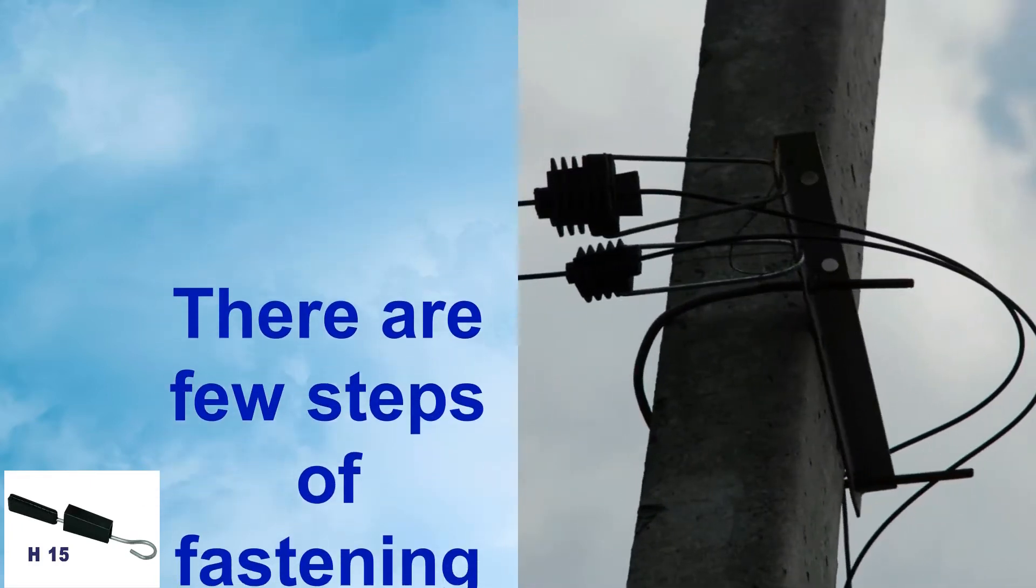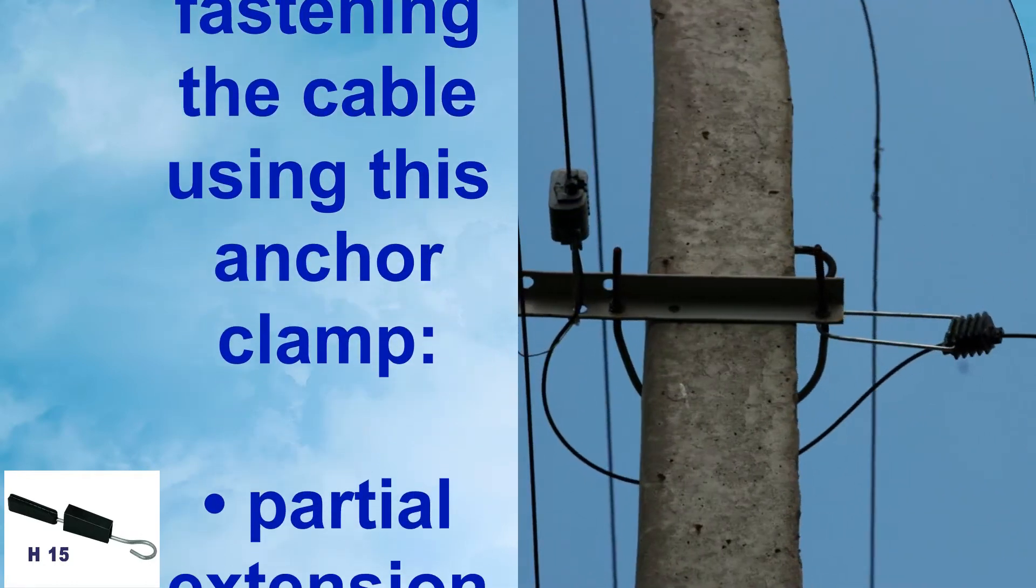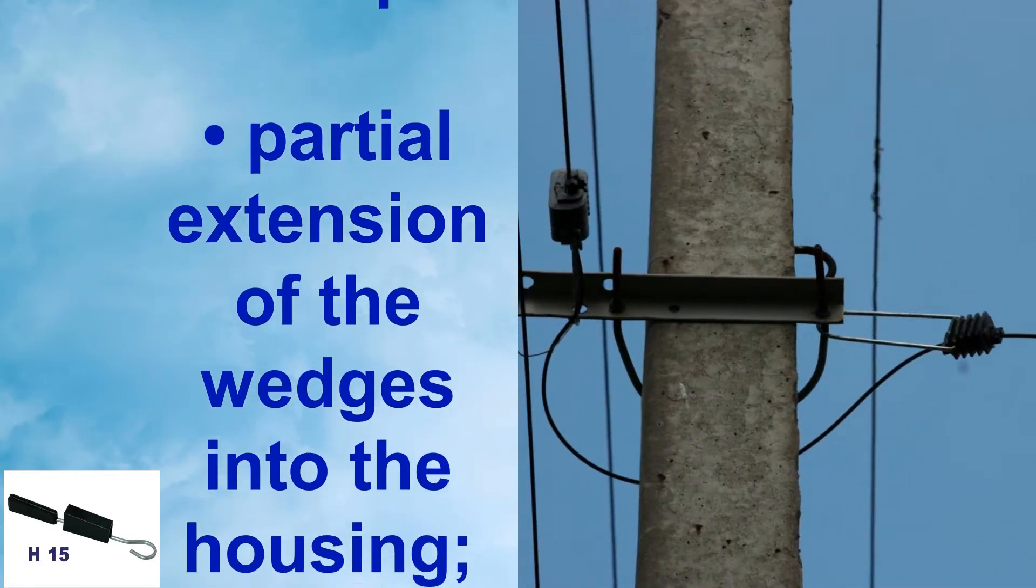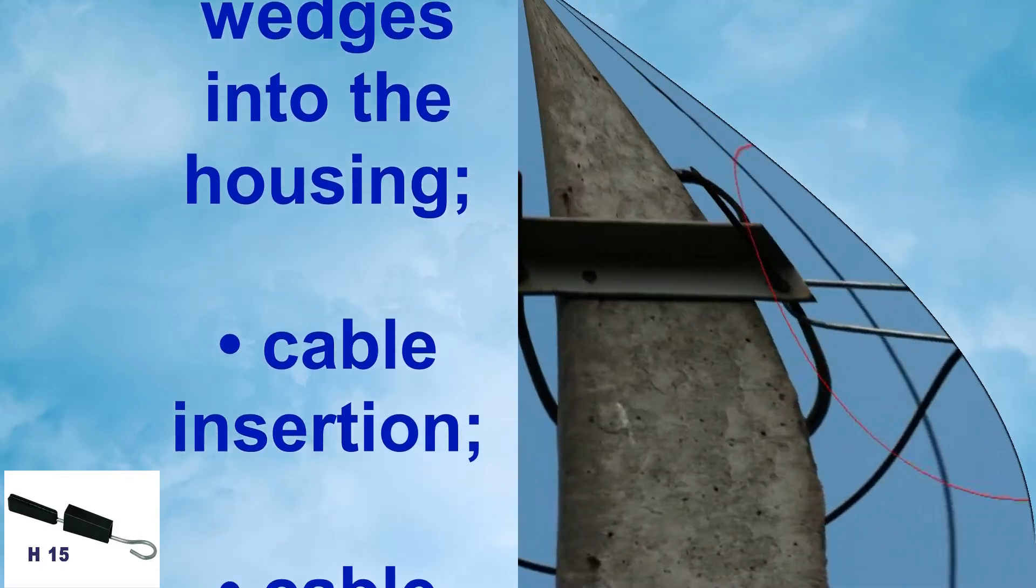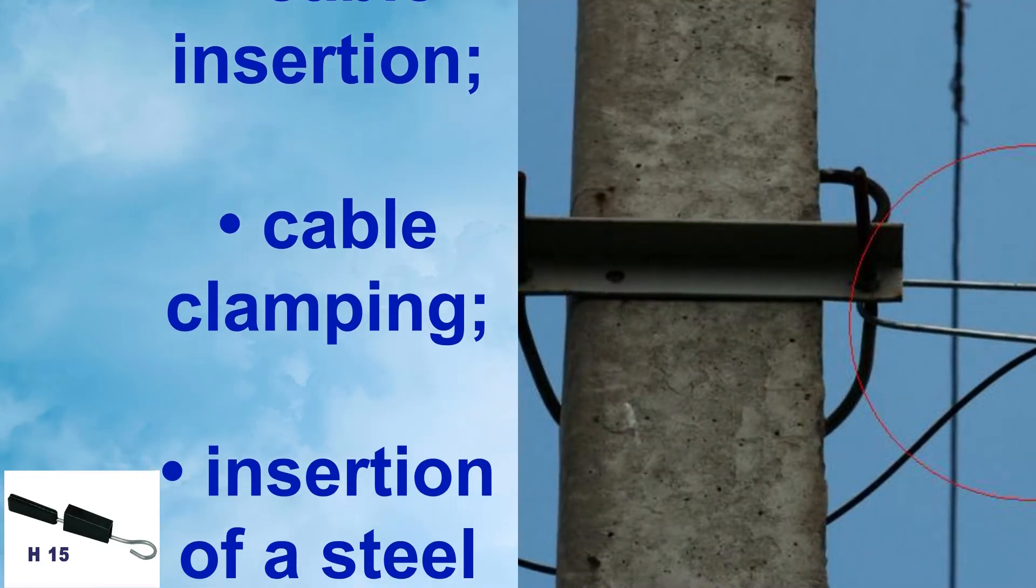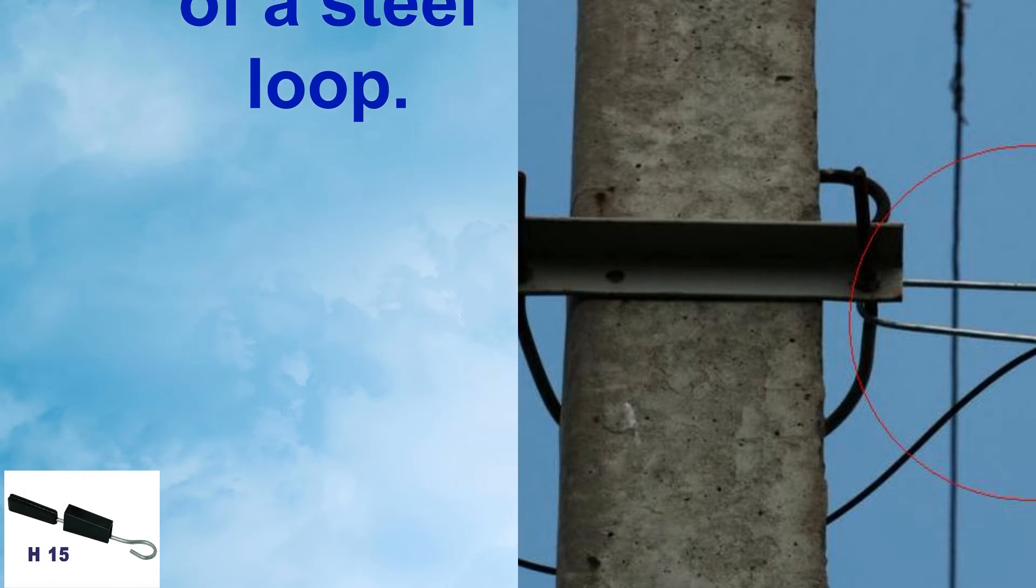There are a few steps of fastening the cable using this anchor clamp: partial extension of the wedges into the housing, cable insertion, clamping, cable clamping, and insertion of a steel loop.